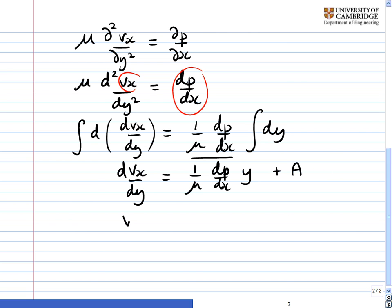Then we do this step again. We'll just get Vx equals 1/μ dp/dx y²/2 plus Ay plus another constant of integration that I shall call B.